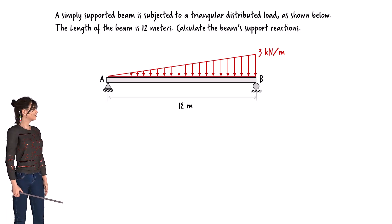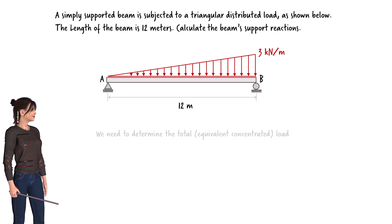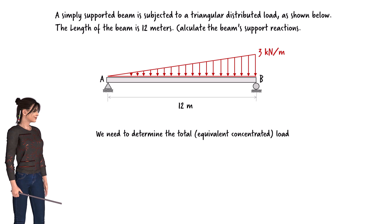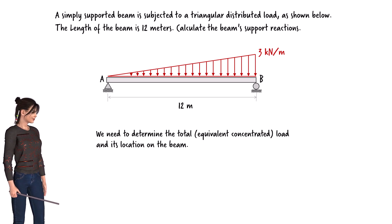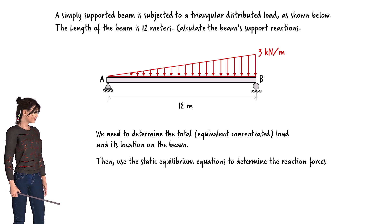To calculate the support reactions for a simply supported beam subjected to a triangular distributed load, we need to find the total load, also called the equivalent concentrated load, and the location of this load along the beam. Then we can use the static equilibrium equations to find the reactions at the supports.